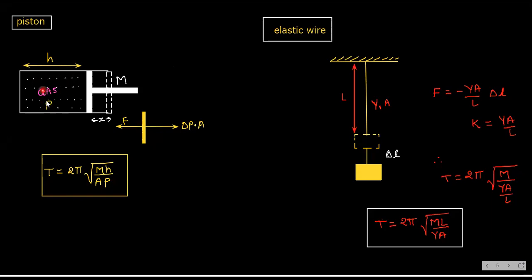Next application: a piston of mass m inside a cylinder. Gas is filled under pressure P, and A is the area of cross-section of the piston. The height of the gas column is h. When this piston oscillates, its time period is T = 2π √(mh / (A·P)), where P is the pressure inside, m is the mass of the piston, h is the length of the gas column, and A is the area of cross-section.